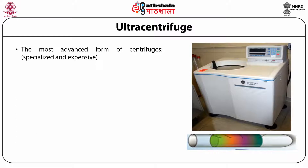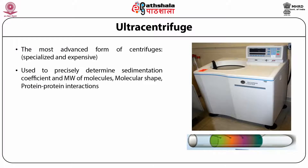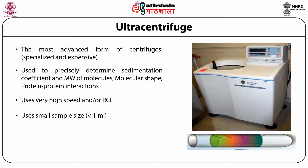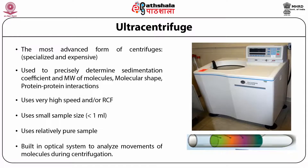Ultra centrifugation is the most advanced form. It is very specialized and highly expensive, used precisely to determine sedimentation coefficient, molecular weight, molecular shape, protein-protein interactions, and has a wide range of applications. It works at very high speed — more than 1 lakh RPM — and uses a small sample size, usually less than 1 ml, mostly for analytical purposes, although preparative forms also exist. The most advanced feature is its inbuilt optical system, allowing analysis of molecule movement during centrifugation for determining biological and physical properties.